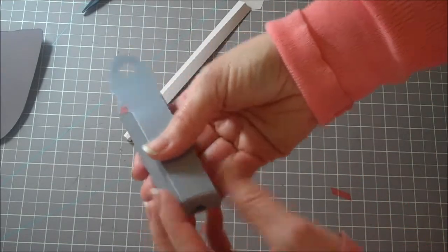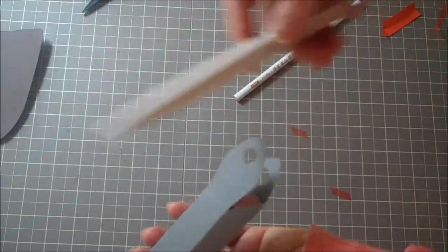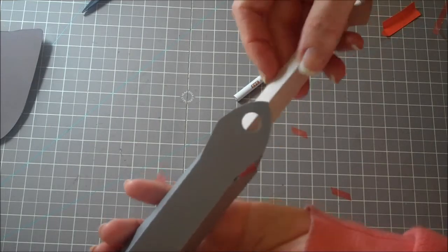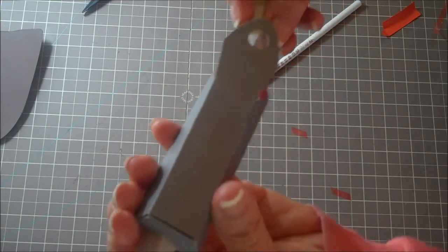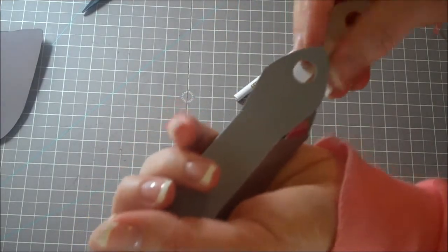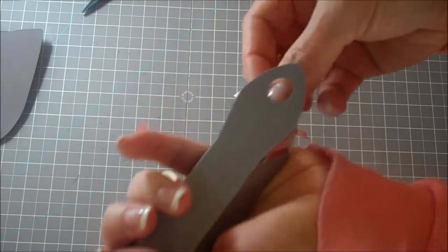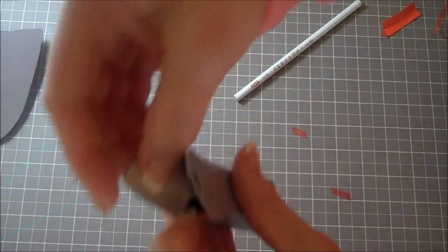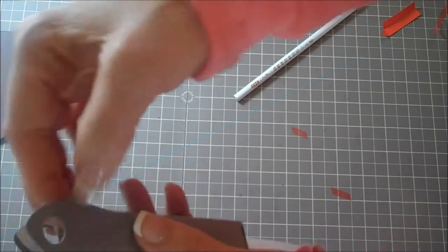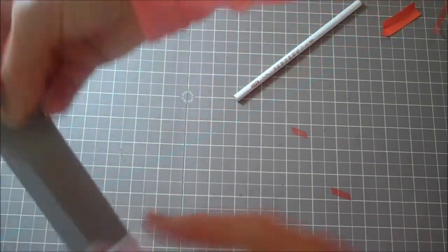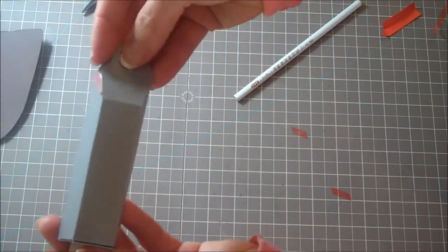And now the next step is to take this little guy here and place it through this right here. And you're going to line up these here. And then this will close down like that. So that's how that looks there.